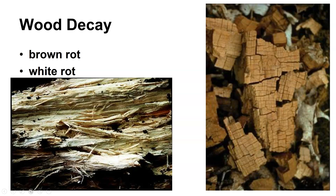Wood often has a material in it called lignin. Lignin is brown in color and is very difficult to break down. One of the reasons we don't produce a lot of alcohol from wood in the United States is because it contains too much lignin — you don't get proper breakdown of the lignin, so you don't get enough soluble carbohydrate for the yeast to produce alcohol.